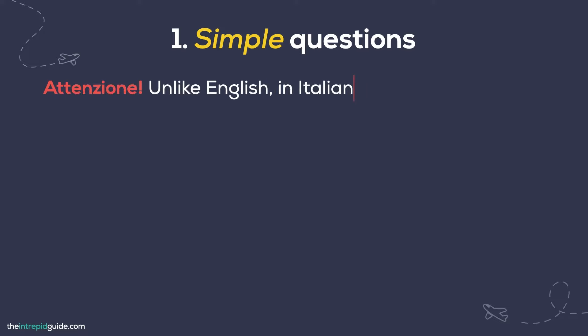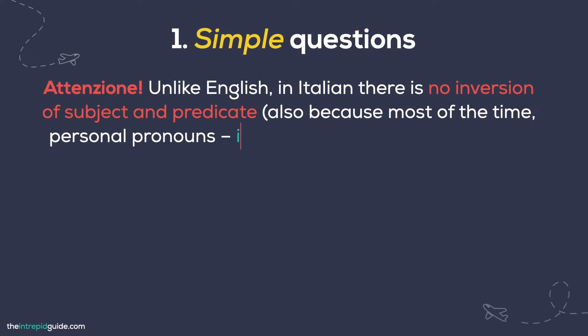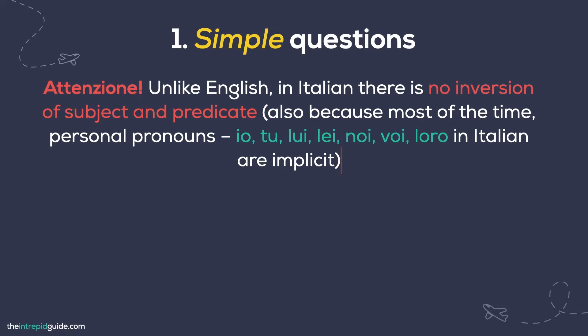Unlike English, in Italian there is no inversion of the subject and predicate, also because most of the time personal pronouns such as io, tu, lui, lei, noi, voi, loro — I, you, he, she, and so on — in Italian are implicit, but instead the intonation of your voice rises towards the end of the sentence. Sometimes when the subject is explicit, a question can be formed by reversing the subject and verb, but this is by no means mandatory. It's just a stylistic choice.